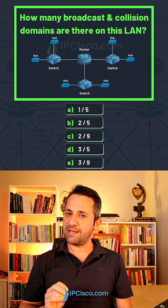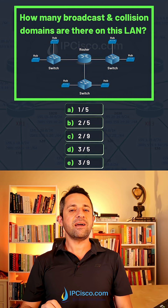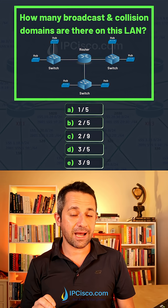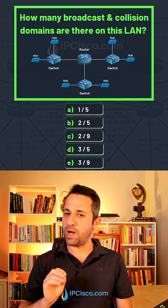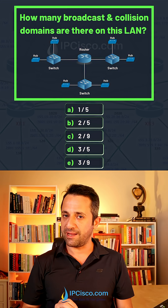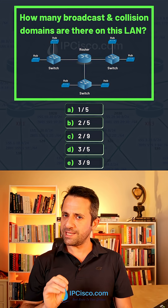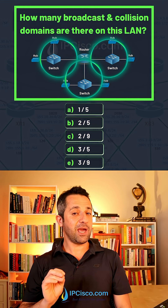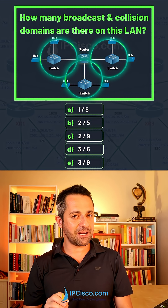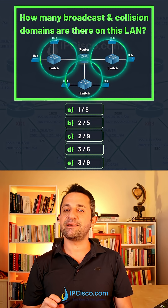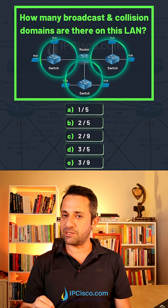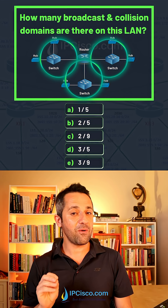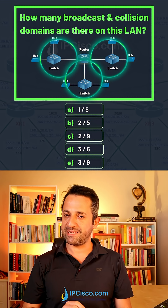First, let's count broadcast domains. Here, as you can see, we have one router, and each router interface is one broadcast domain. Also, one switch is one broadcast domain by default. Here we have three router interfaces, and each of these interfaces is connected to a switch. So we have three broadcast domains.